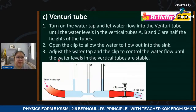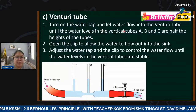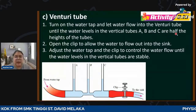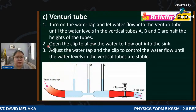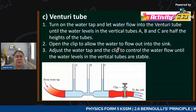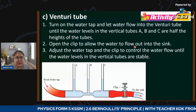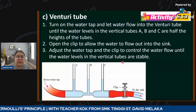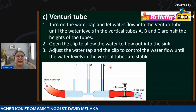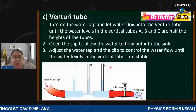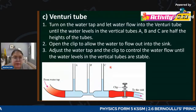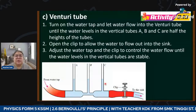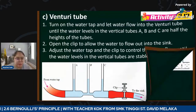Turn on the water tap and let water flow into the Venturi tube until the water level in vertical tubes A, B, and C are half the height. Open the clip to allow water to flow out into the sink. Adjust the water tap and the clip to control the water flow until the water level in the vertical tubes is stable. This is the procedure for the activity.